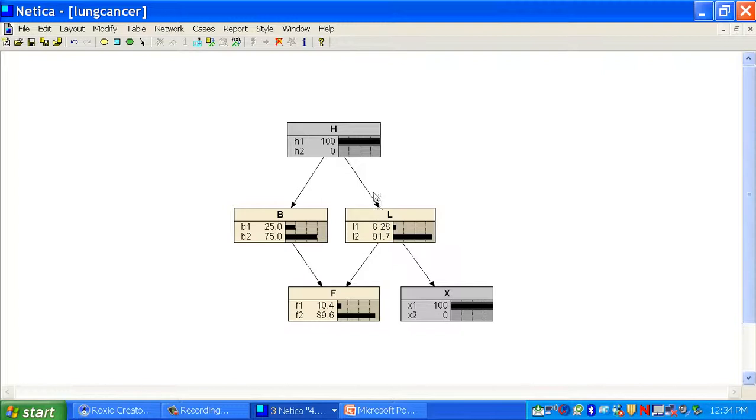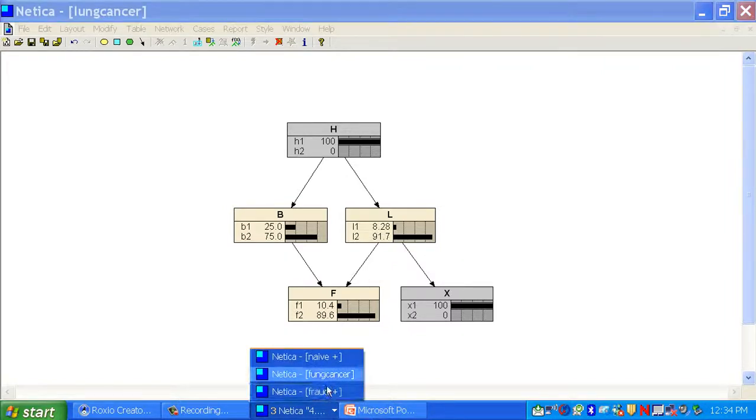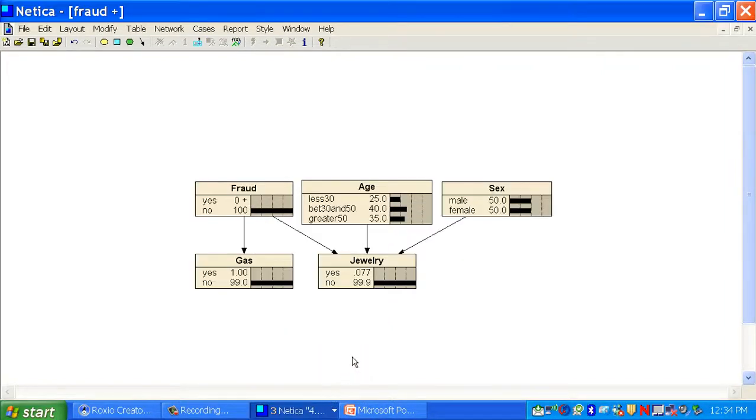Because, as I said before, that only happened because it went through this causal path, and this causal path is blocked off now. That's a pretty nice example of the lung cancer. Let's look at some other ones. Let's look at that fraud network.